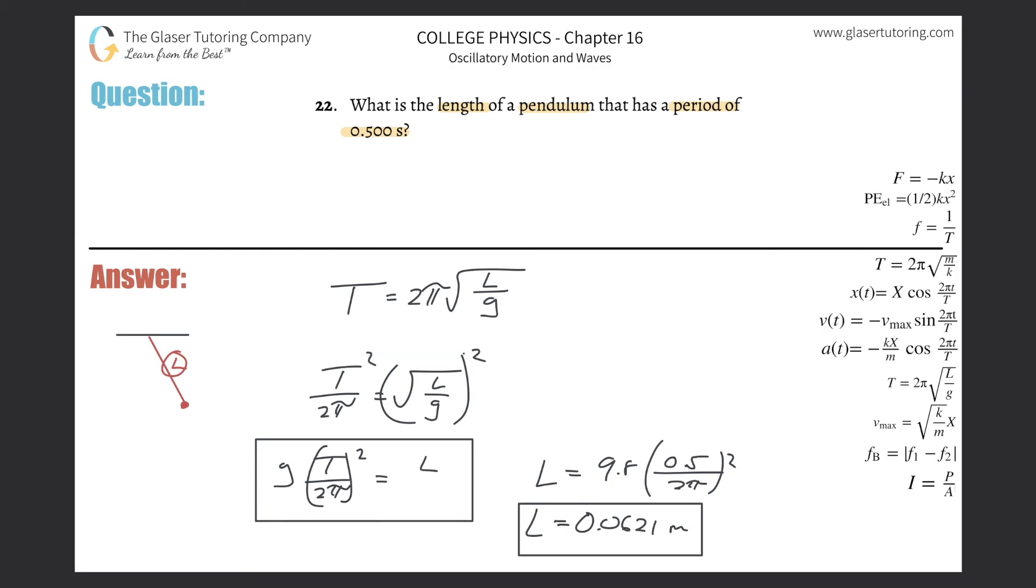Don't just read this formula as T equals 2π times the square root of L over g. No. Say it out in richer detail. The period of oscillation for a pendulum is equal to 2π times the square root of the length of that pendulum's arm divided by g, gravity. You know that g is 9.8. And that's how you want to think through these formulas.